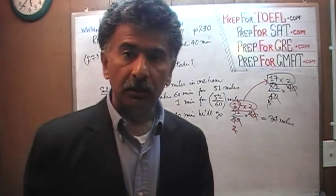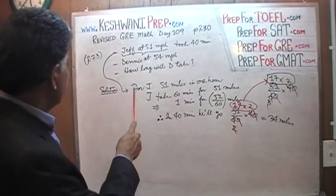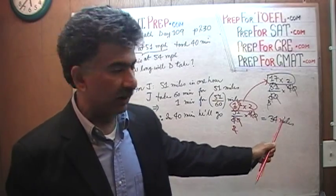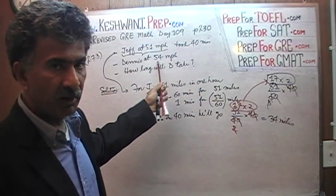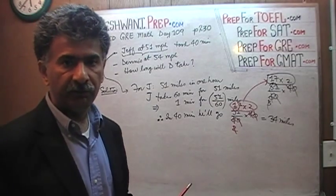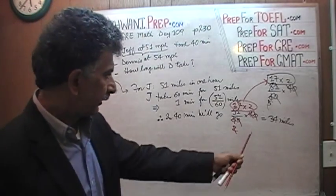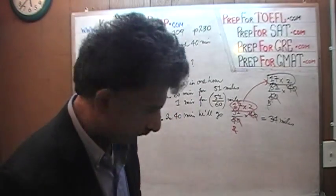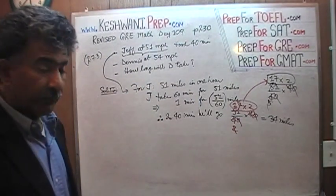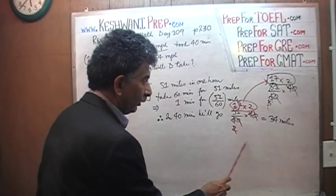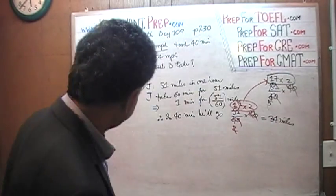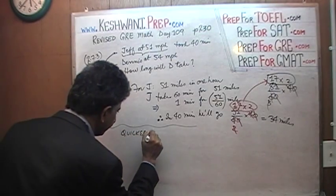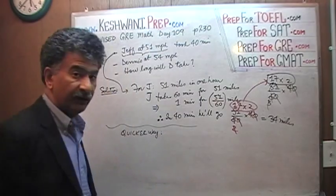Now that we know that Dennis has to go 34 miles at a speed of 54 miles per hour, all we have to do is figure out how long it takes to travel 34 miles at 54 miles per hour. Before we do that work, there was actually a quicker way of doing all of this.